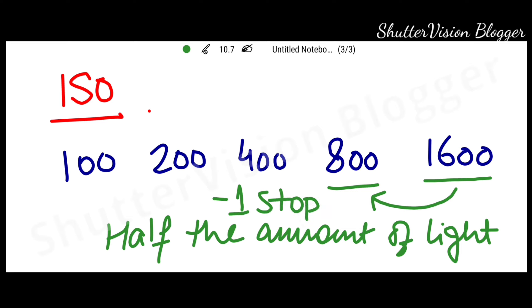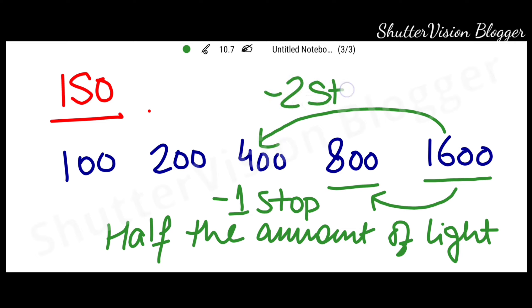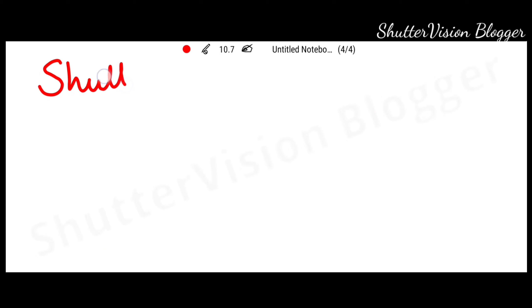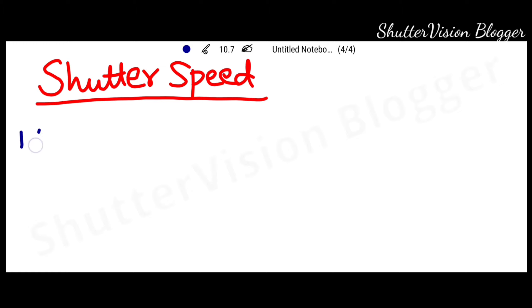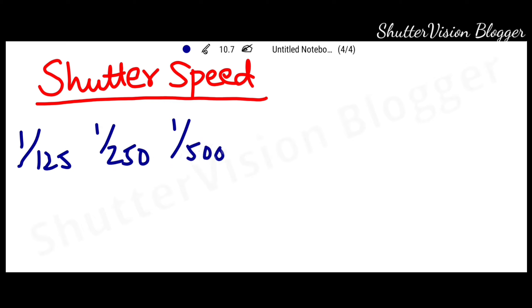And if we come from 1600 ISO to 400 ISO values, then here we are reducing two stops of light in the image.